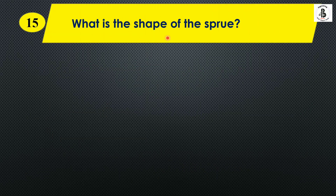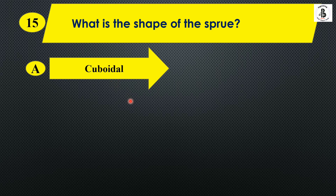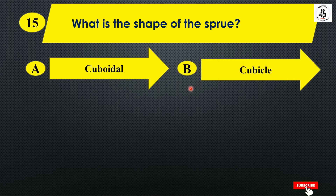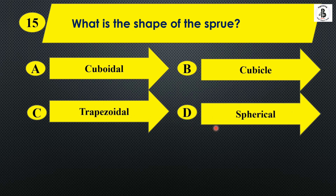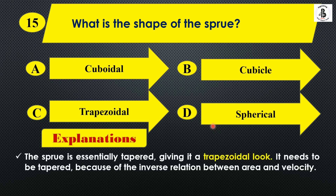Question fifteen: What is the shape of a sprue? Option A: Cuboidal, Option B: Cubicle, Option C: Trapezoidal, Option D: Spherical. A sprue is essentially tapered, giving it a trapezoidal look, so that the molten metal can be easily transferred to the cavity. It needs to be tapered because of the inverse relationship between area and velocity. The answer is Option C: Trapezoidal.